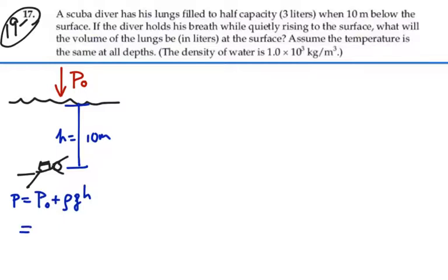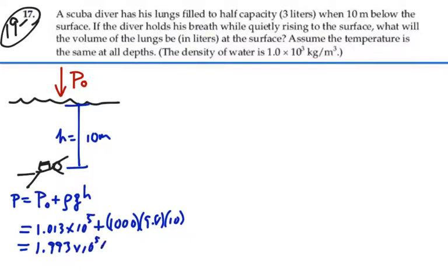In this case it would be 1 atmosphere which is 1.013 times 10 to the 5 newtons per meter squared plus the density of water which we are given as 1000 times 9.8 times 10, and this is equal to 1.993 times 10 to the 5 newtons per meter squared.